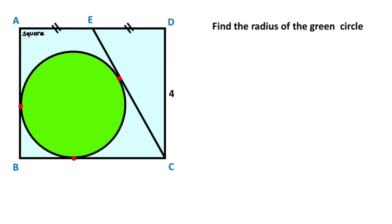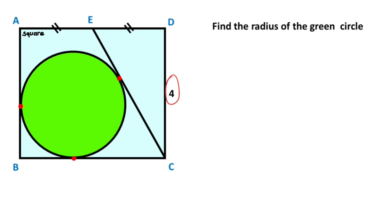In this video, we have one square and one circle. These are given as tangent points, and these two parts are given as equal. One side of the square is given as four units. The question is: what is the radius of the green circle?